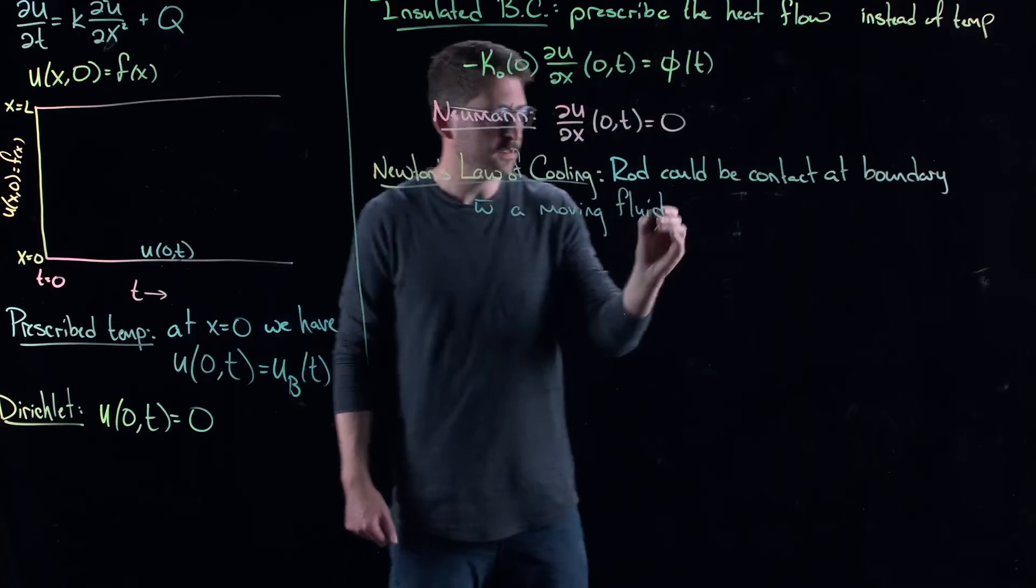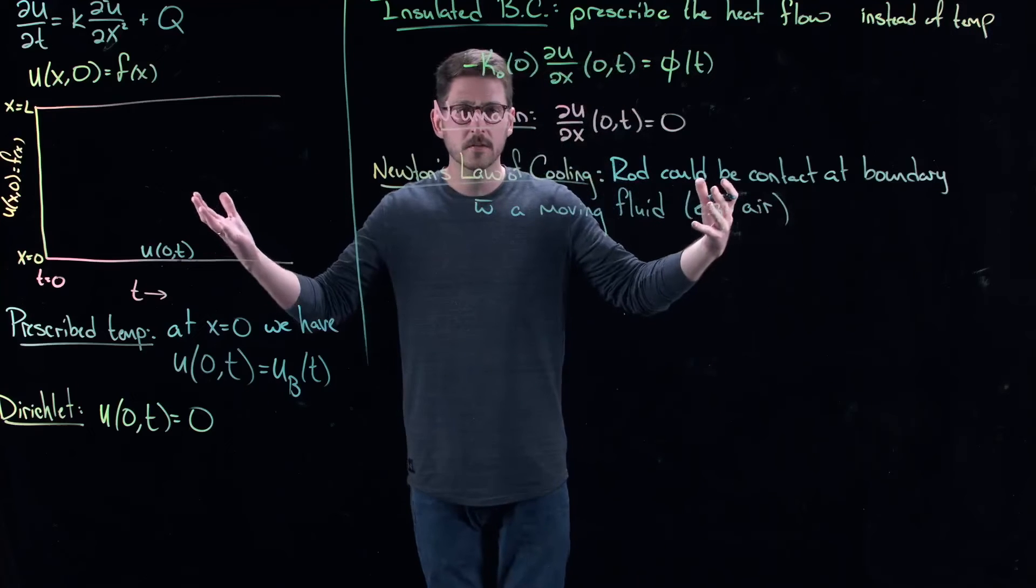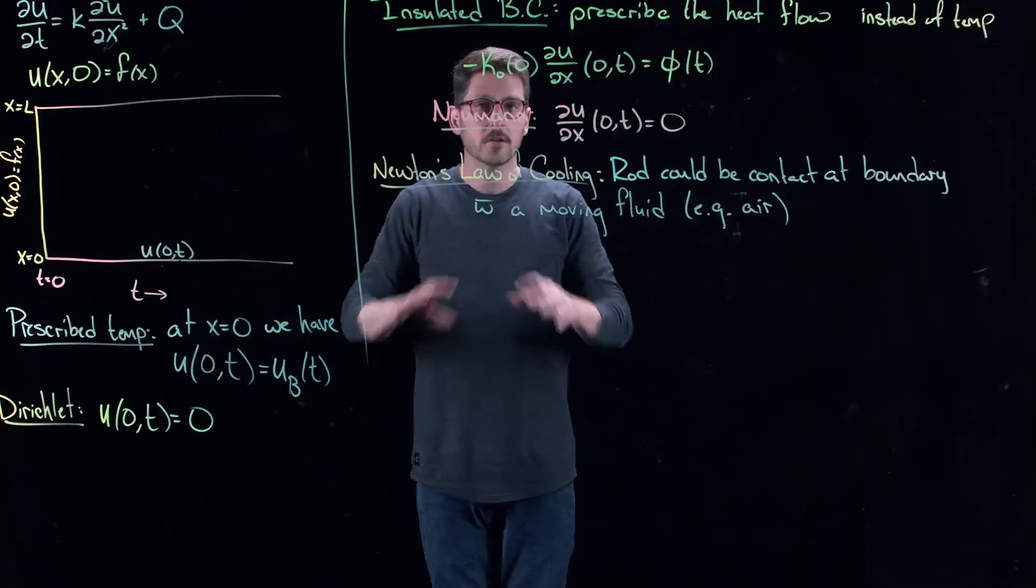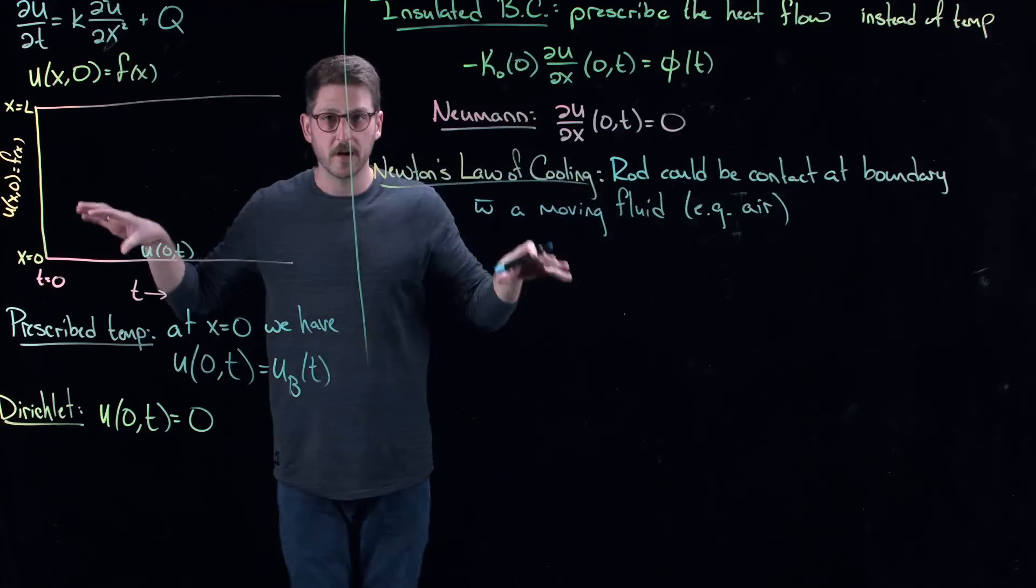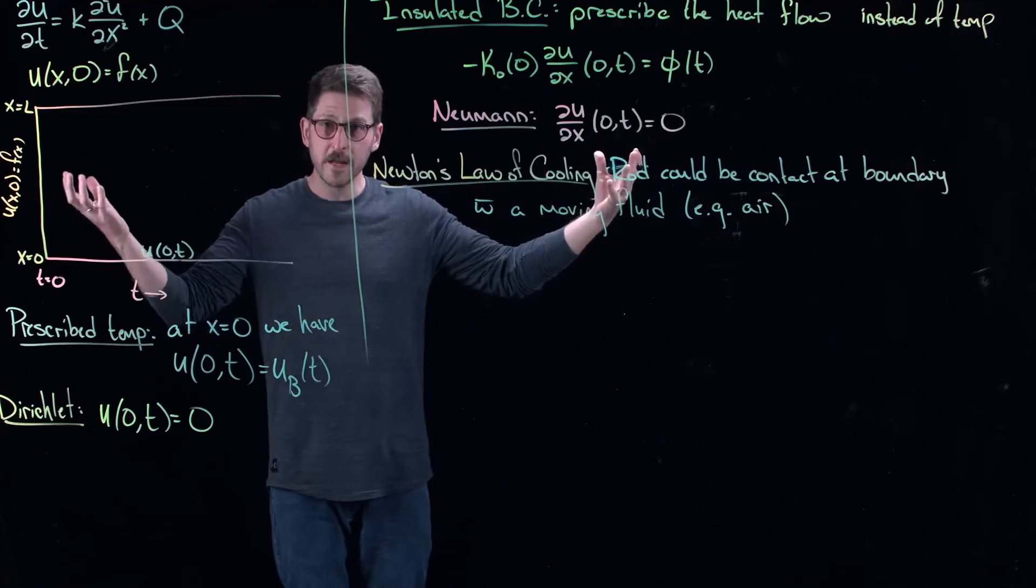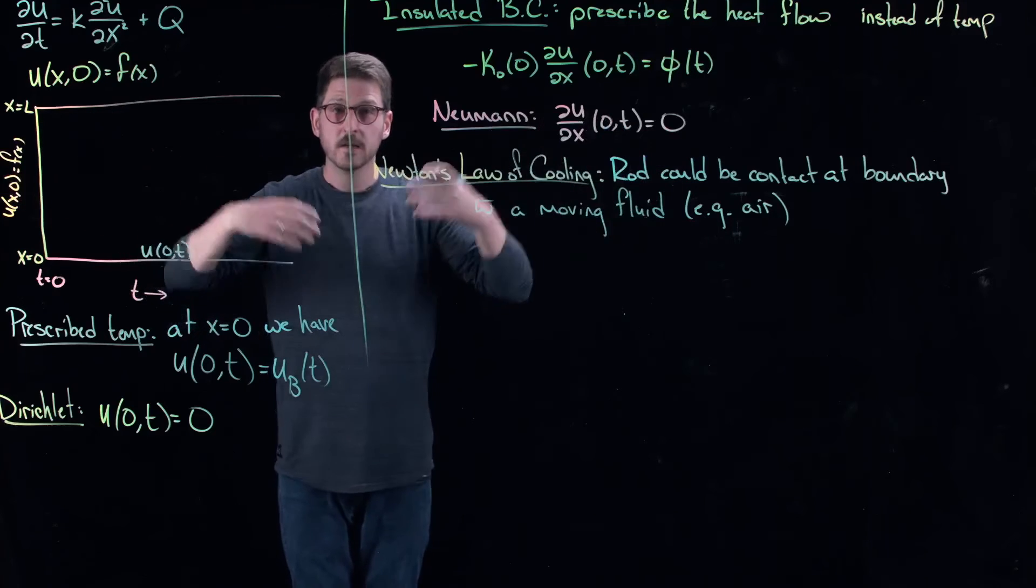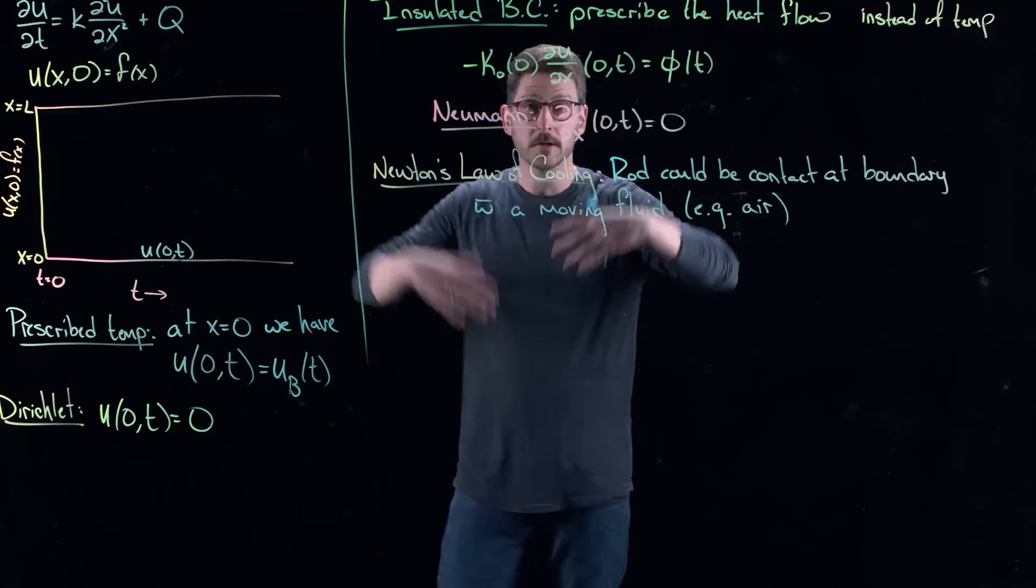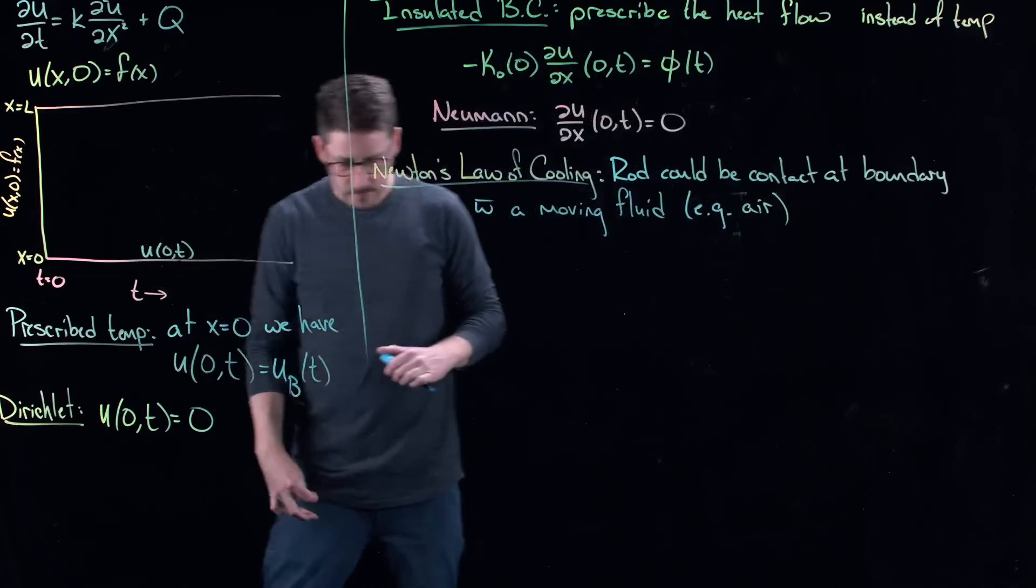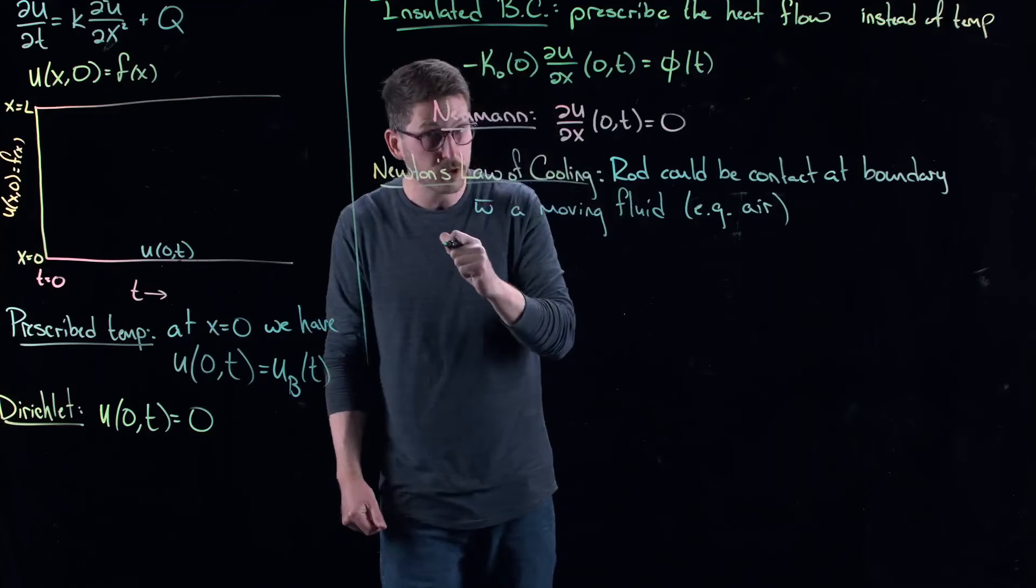The rod could be in contact at the boundary, let's say at x equal to zero or x equal to L, with a moving fluid. Moving fluid, usually the example of this would be air. If the rod is just hanging out, there's some sort of influence potentially from the external air temperature. If my rod is piping hot, you think of this coming out of like a steel mill or something like that, you have this big, huge, red hot rod of metal, it comes in contact with cooler air. So you're losing heat potentially at the boundaries because you're coming in contact with a moving fluid, air.